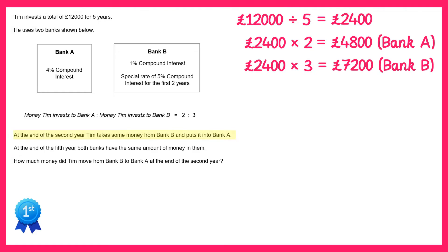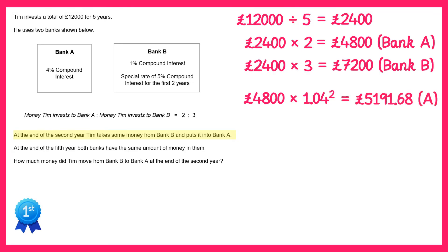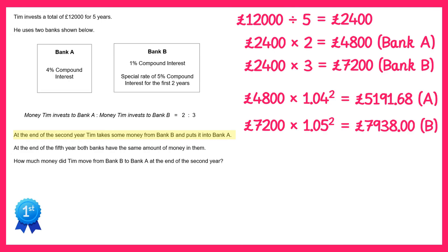It then says that at the end of the second year Tim takes some money from Bank B and puts it into Bank A, so we need to work out how much money would be in the banks after two years. For Bank A we've got £4,800 at 4% compound interest, so for two years that's 4,800 times 1.04 squared, which gives £5,191.68. For Bank B we've got £7,200 at a special rate of 5% compound interest for two years, giving £7,398.